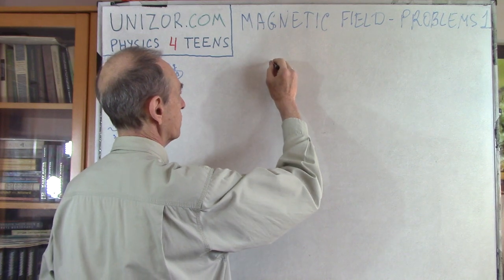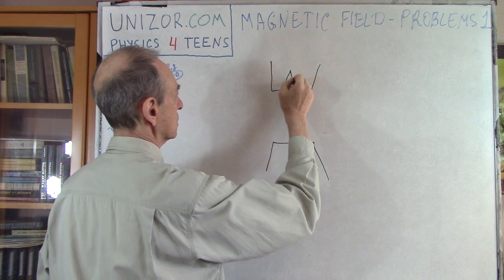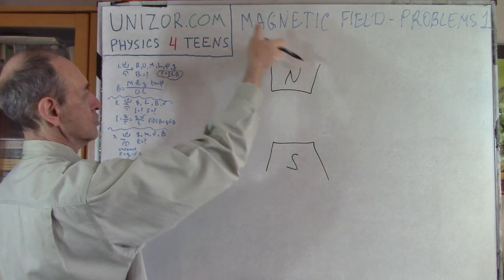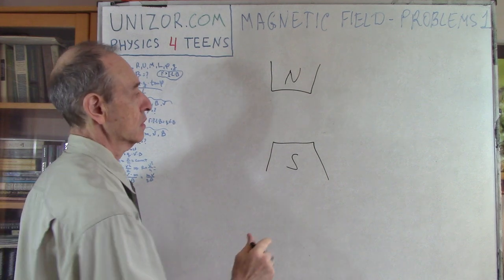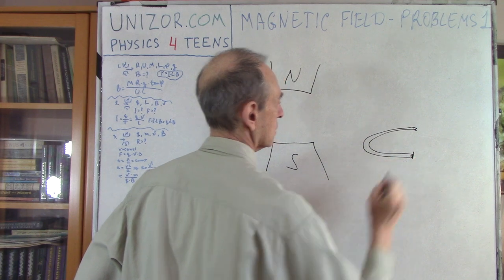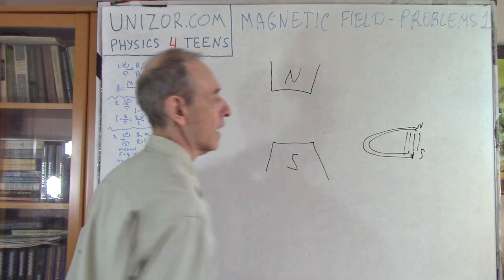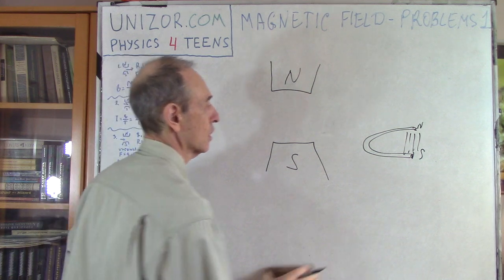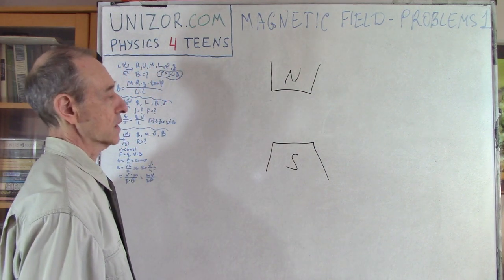Consider there is a uniform magnetic field. This is the north and south of some kind of a magnet around it, but in between these two it's uniform. For instance, it can be a horseshoe kind of magnet — this is the north, this is the south — and these are the lines of the field, which we can assume are uniform.